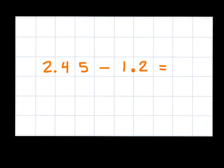In this problem, we are going to take away 1 and 2 tenths from 2 and 45 hundredths. When subtracting decimals, we would follow many of the same steps as we would when adding decimals. So our first step is going to be to line these numbers up vertically, and I'm going to line them up by place value using the decimal point as a guide.